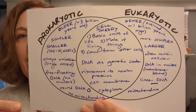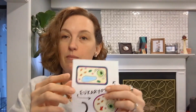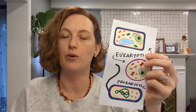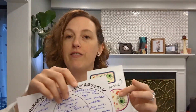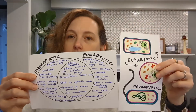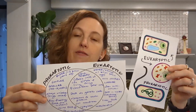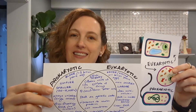Now you should have the middle of your organizer filled in as well. That's a basic overview of what all kinds of cells have in common as well as ways in which they're different from one another. I hope the video, the coloring, and the Venn diagram helped you better understand this really foundational biological concept.